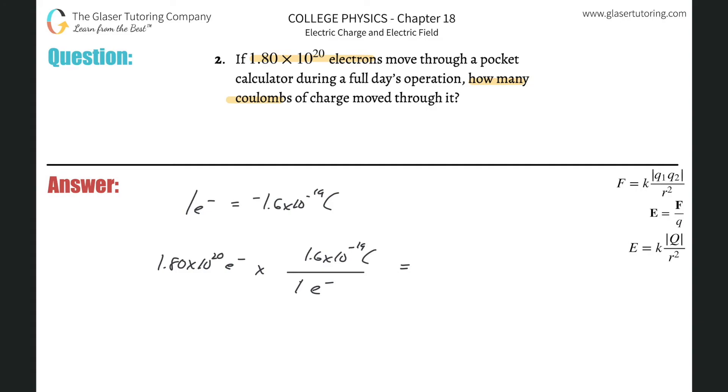And now all we need to do is basically just do the multiplication. So it's 1.8 times 10 to the 20, times 1.6 times 10 to the negative 19, we get about 28.8. So 28.8, and then you can round that a little bit if you need it, but that's going to be in terms of coulombs.